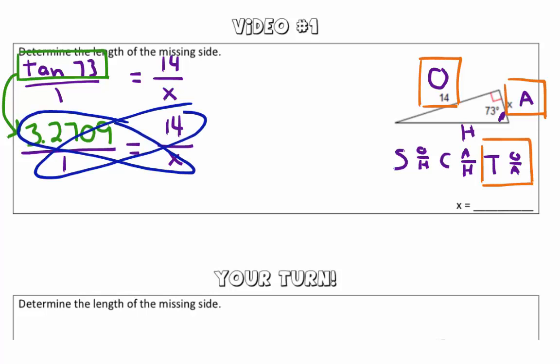To solve this problem, we're going to cross multiply. So, what we are left with is 3.2709X is equal to 14.